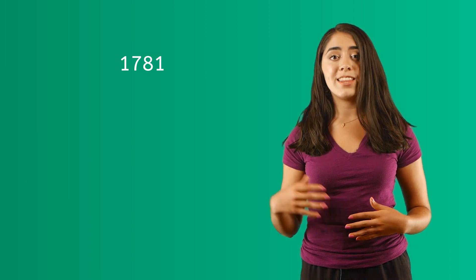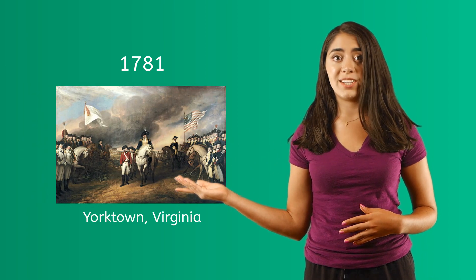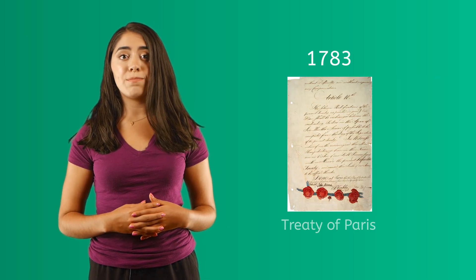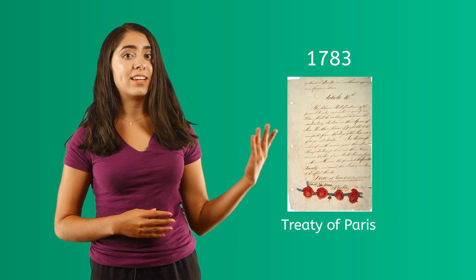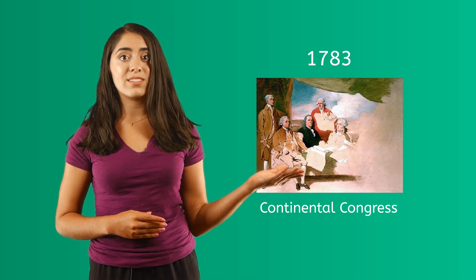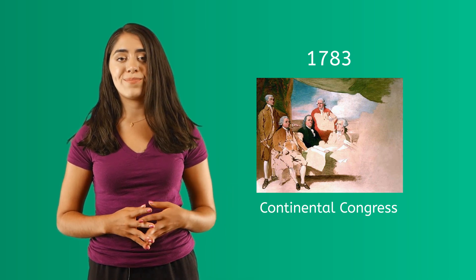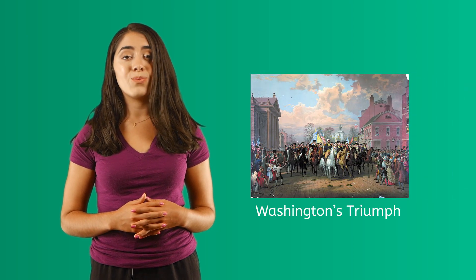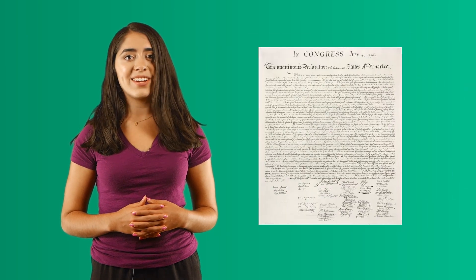The war finally began to end in 1781, when the British were forced to surrender in the battle at Yorktown, Virginia. Just two years later, the Treaty of Paris was created and signed by the Continental Congress, as well as by representatives of King George III. It was official: the United States of America was free, and had the Declaration of Independence to prove it.